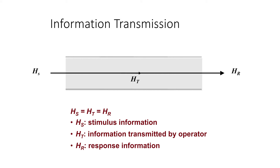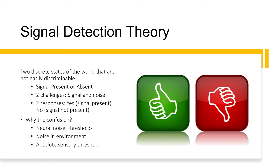Now let's talk about signal detection theory. Signal detection is a paradigm or common situation used to understand sensation, perception, and even higher level functions — for example, medical diagnoses, observation tasks, or hearing the phone ring while you're in the shower. Because we don't necessarily accurately perceive what is sensed, signal detection theory helps us understand patterns or biases. Signal detection helps us discriminate between two discrete states of the world that aren't easily discriminable — essentially, we're looking at whether the signal is present or absent. There are two challenges: the level of the signal has to cross the threshold of detection, and any noise present may affect the threshold level. Difficulty can be increased by neural noise, which is present at all times, as well as noise in the environment such as ambient touch, light, or sound.